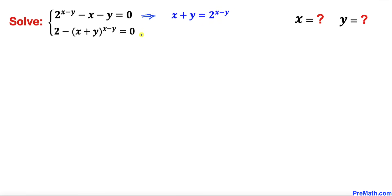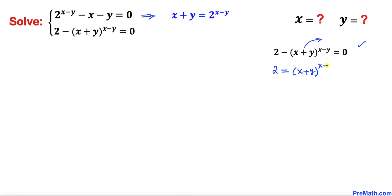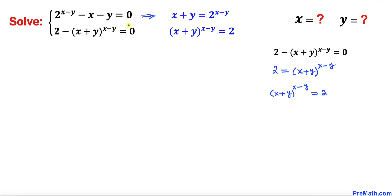Now let's focus on the second equation. Here I have copied it down. Let's move a term to the right-hand side, so this becomes 2 = (x+y)^(x−y). Switching them around, this equation has been transformed into (x+y)^(x−y) = 2.